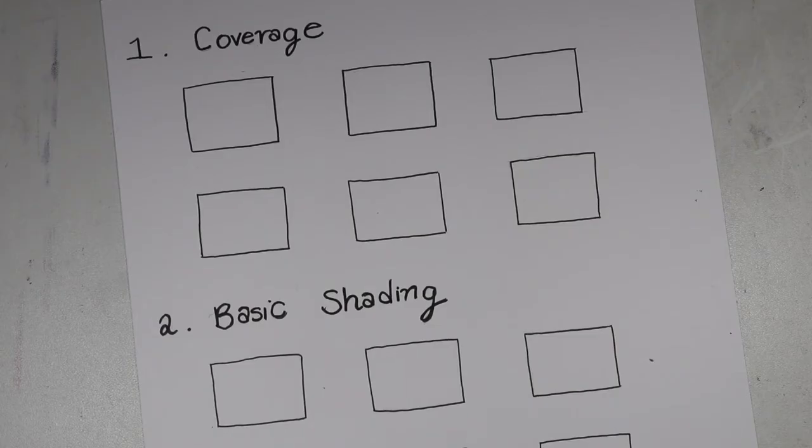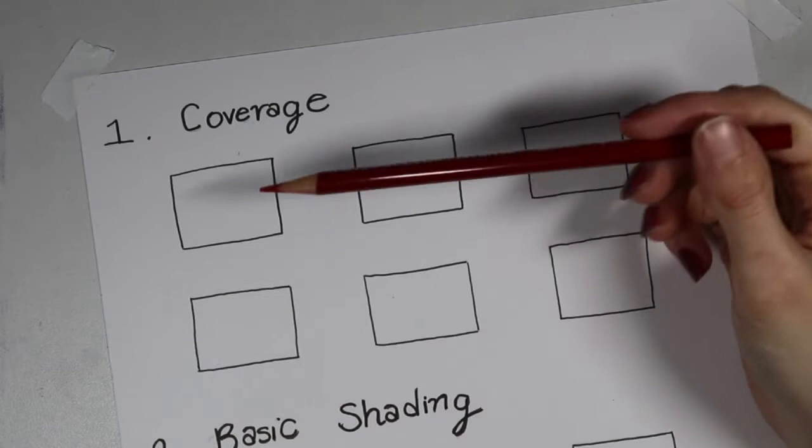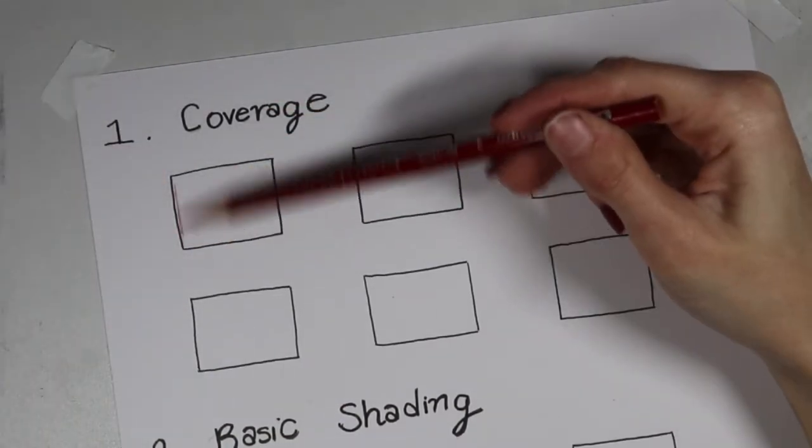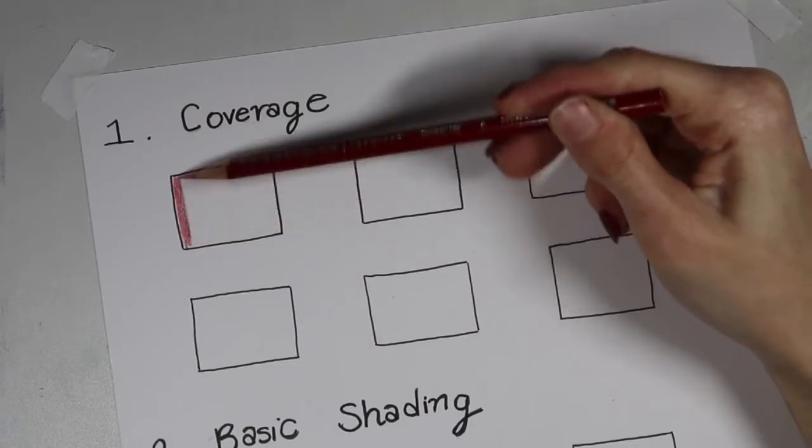So in today's video, we're going to go through this short little lesson where we do some colored pencil exercises. The first topic is pencil coverage. I'm going to be using this aggressive red color by Prismacolor, which is called Crimson Red, to demonstrate for you here in these beautiful little boxes.